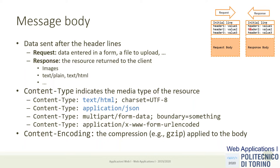The Content-Type header — valid in both requests and responses — specifies the format of the body. In a request it describes what is being sent; in a response it describes the format of the response body. Most pages will have a content type of text/html with an optional charset specification for character encoding. We'll also work a lot with application/json format for exchanging data between server and client, and there are other content types for sending forms in different modalities.